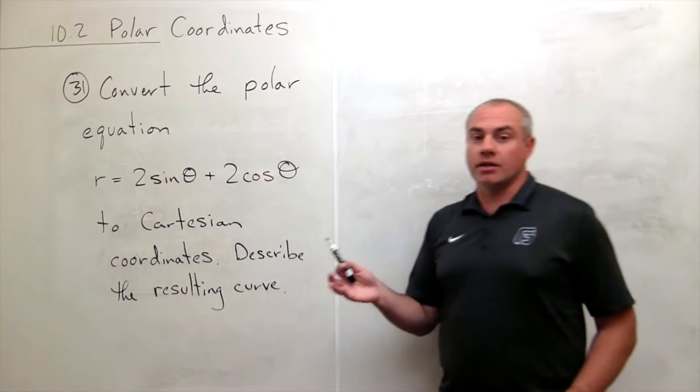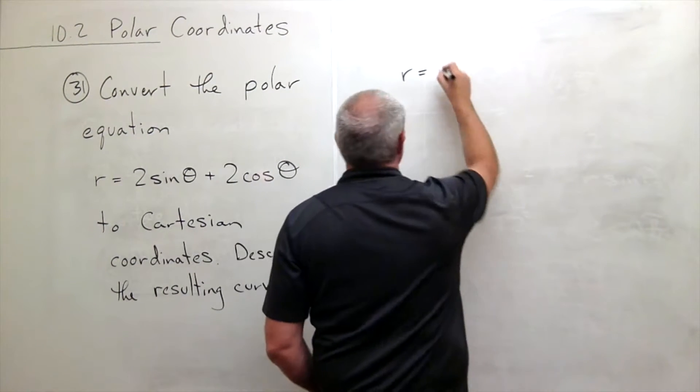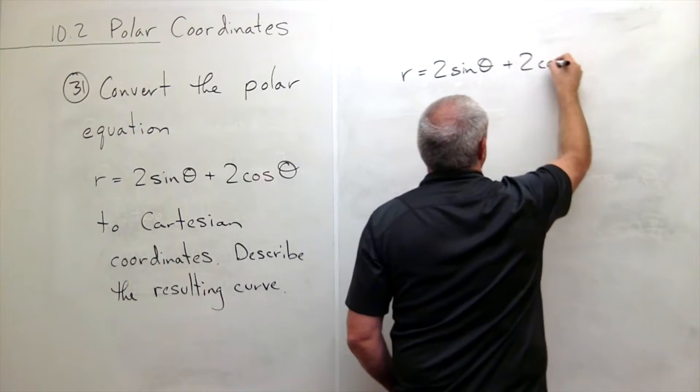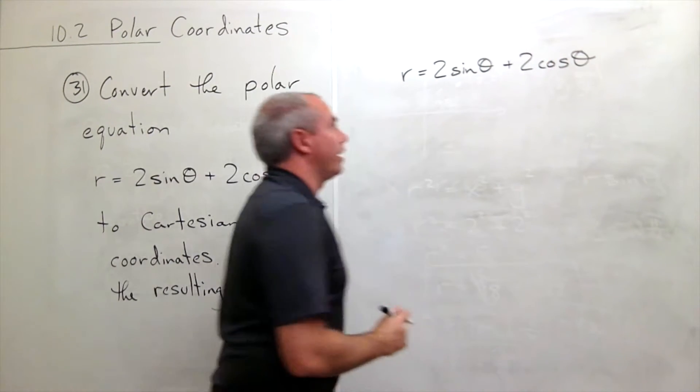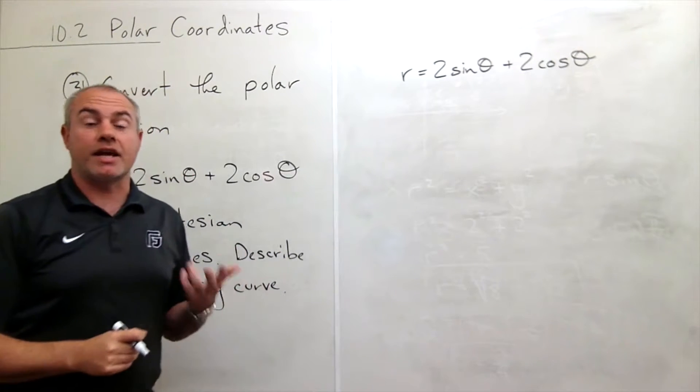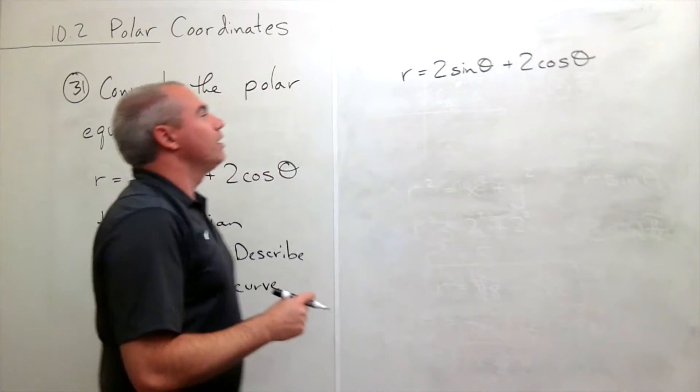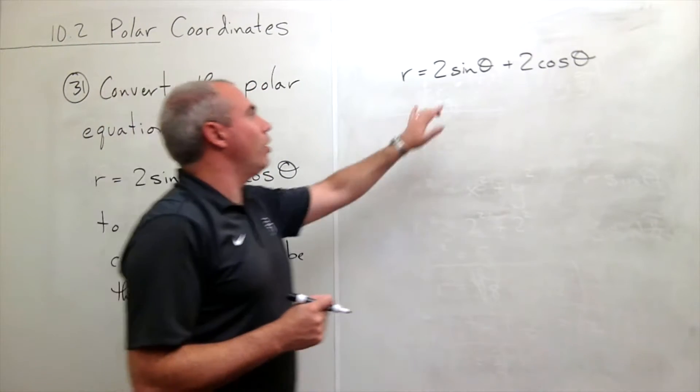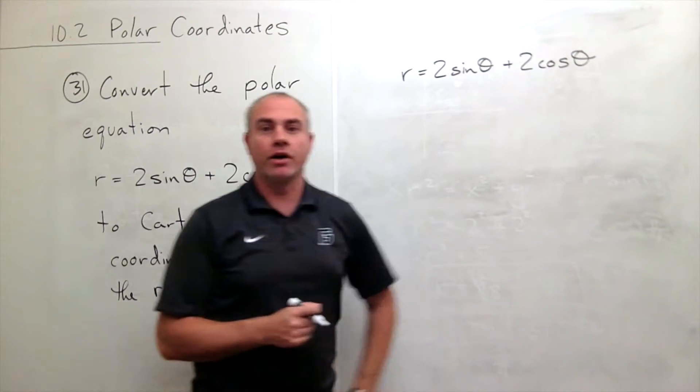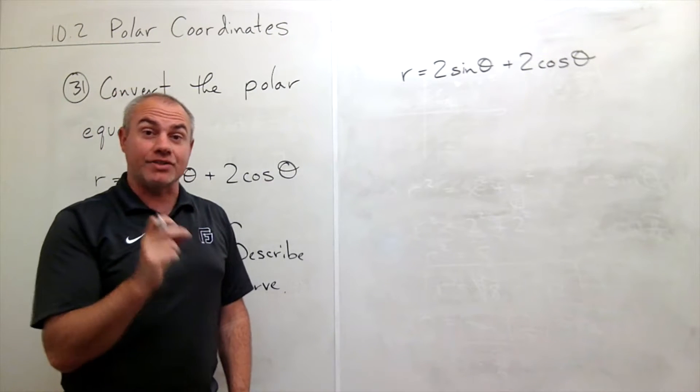Let me start by rewriting my polar equation. We have r equals 2 sine theta plus 2 cosine theta. I'd like to rewrite this as a rectangular or Cartesian curve. I don't really know how to convert sine of theta or cosine of theta over to Cartesian as is, but I do know something about r sine theta and r cosine theta.